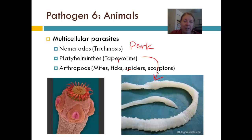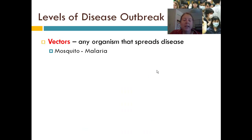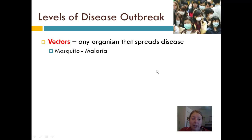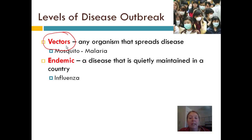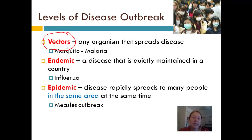The last thing I want to cover is some terms related to disease outbreak. Vectors are a way that pathogens — especially protists and microorganisms — can be spread: it's any organism that isn't affected by a particular pathogen but can help spread it. For example, mosquitoes can spread malaria or West Nile virus. If a disease is quietly maintained just below the radar, it's known as endemic, like the flu every year. If it spreads really quickly in the same area, that's known as an epidemic — such as measles, salmonella, meningitis, or whooping cough outbreaks.